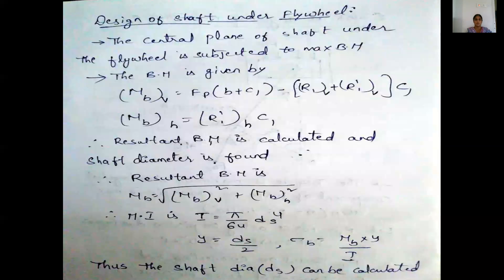You find the total compressive stress. After that, design of shaft under flywheel — you take the center plane, which depends upon the maximum bending moment in the vertical and horizontal reactions. The resultant bending moment is calculated and shaft diameter is found. Resultant bending moment is mv equal to square root of mvp squared plus mvh squared. Then moment of inertia I is equal to π by 64 ds to the power 4, y equal to ds by 2, and sigma B equal to mv into y by I. Thus the shaft diameter is calculated.